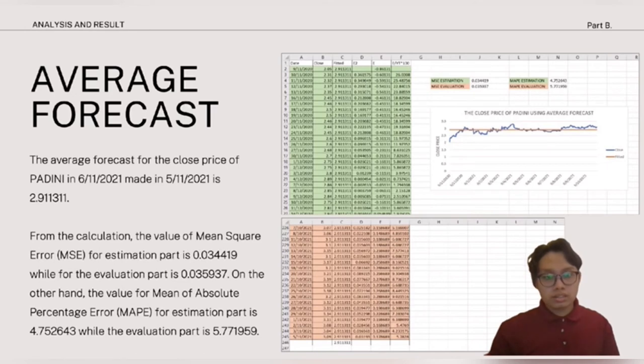As we can see, this is the result of close price Padini using average forecast. The graph shows that it has one straight fitted line between the trend of close price. Then we get the average forecast for the close price of Padini on 6 November 2021. That made in 5 November 2021 is 2.911311. From the calculation, the value of mean square error for estimation part is 0.034419 while the evaluation part is 0.035937. On the other hand, the value for mean absolute percentage error for estimation part is 4.752643 while the evaluation part is 5.771959.